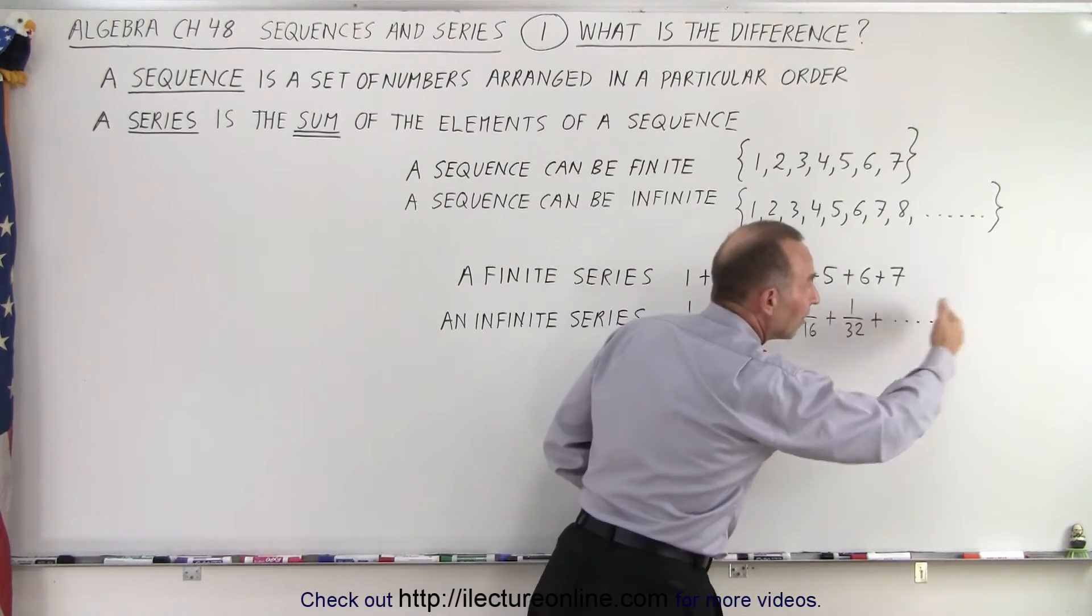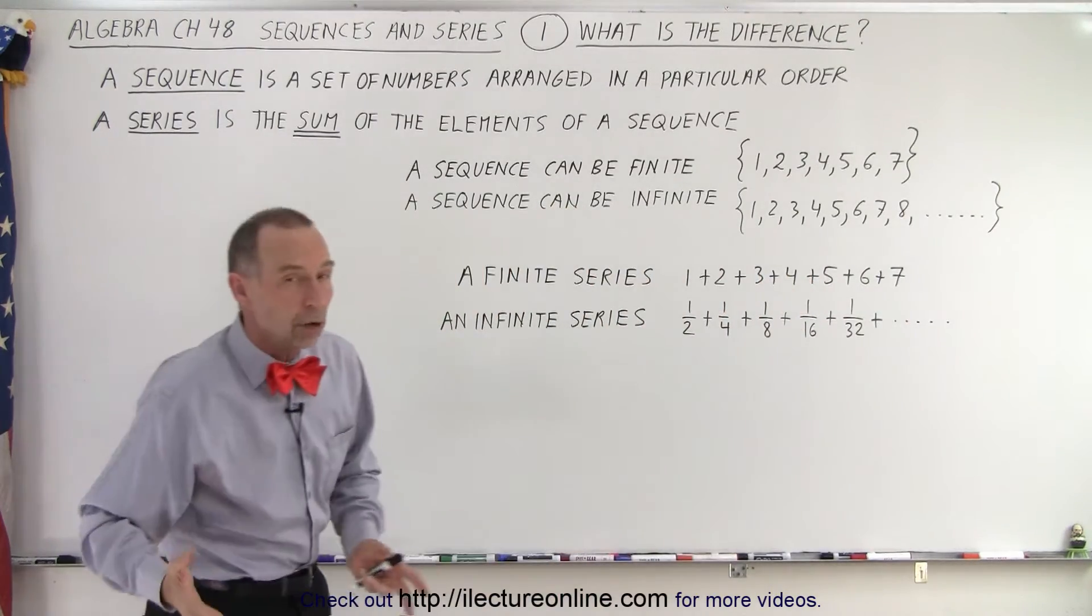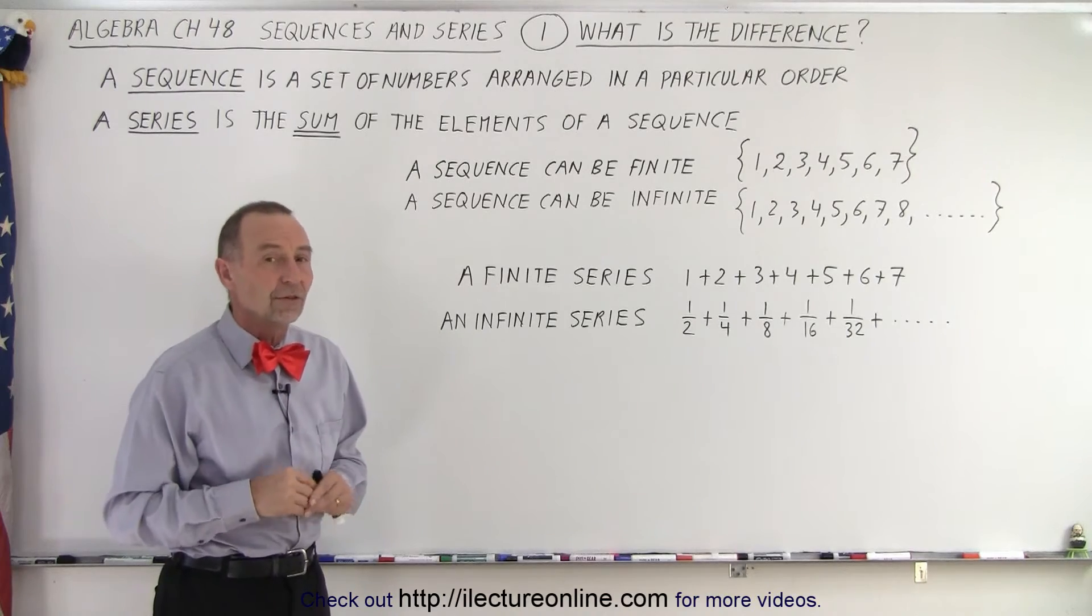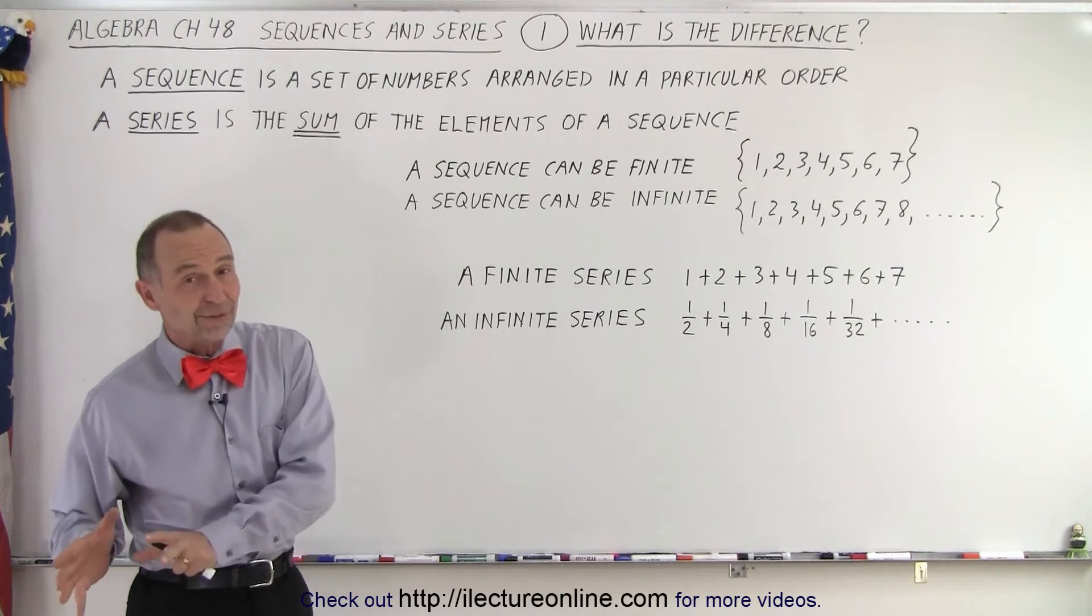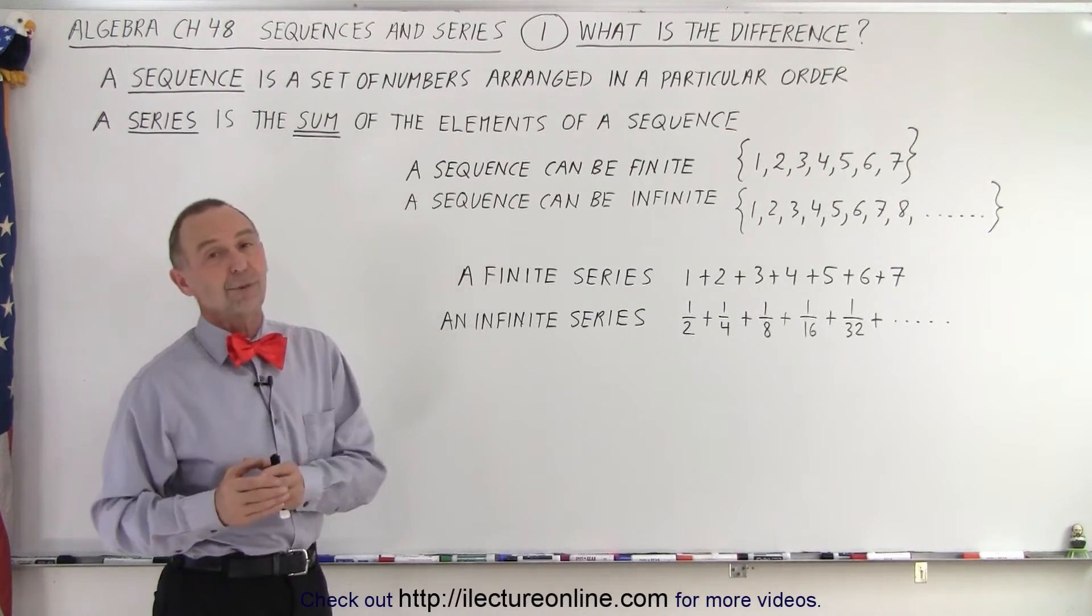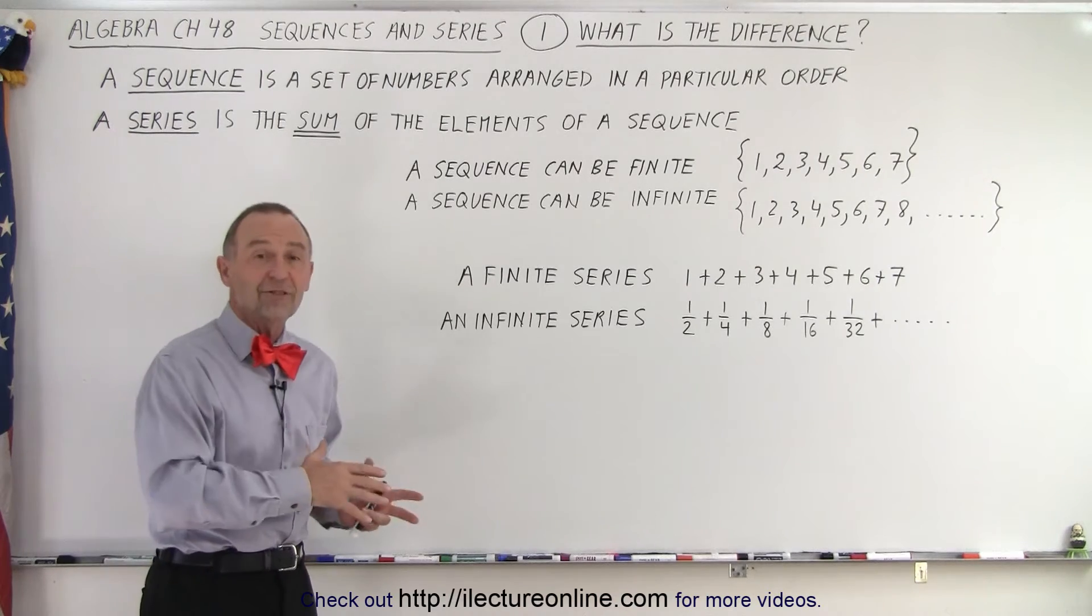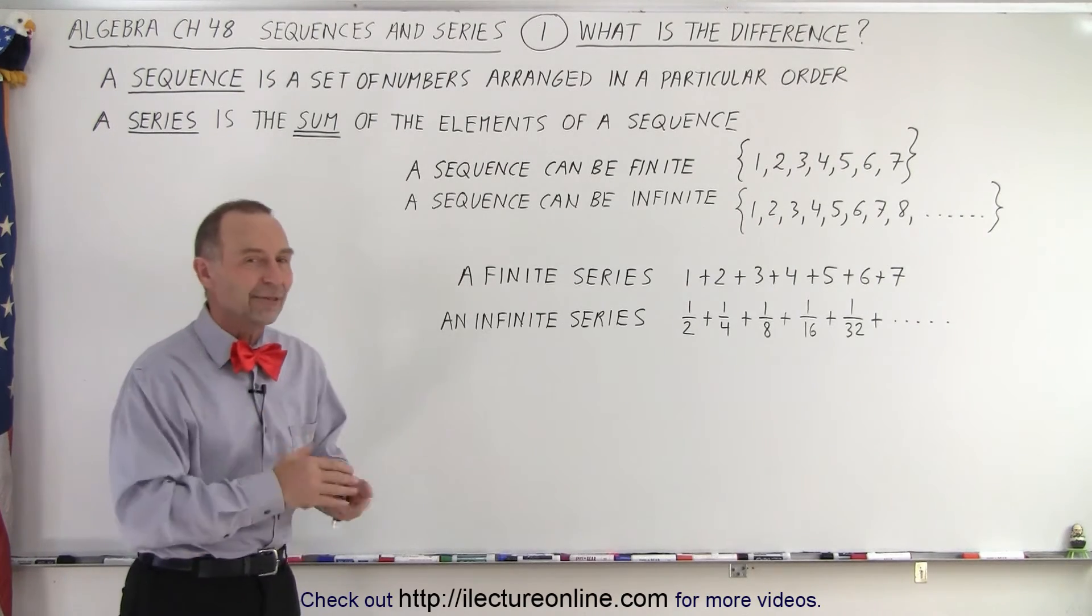And then if we add them all up, and we add an infinite number of them, we have what we call an infinite series. So now we know the difference between a sequence and a series, and we know the difference between a finite and an infinite sequence, and a finite and an infinite series.